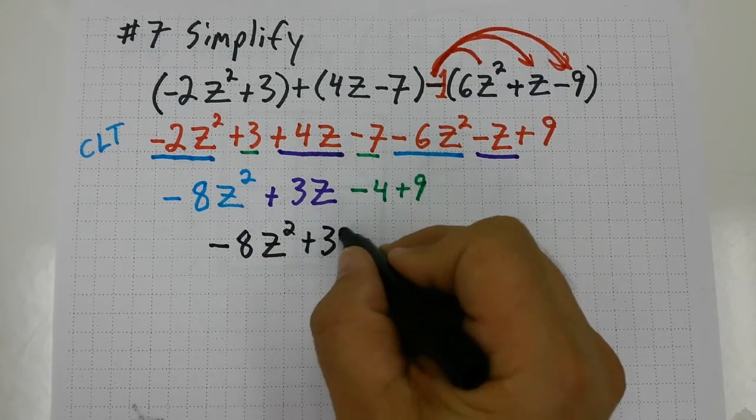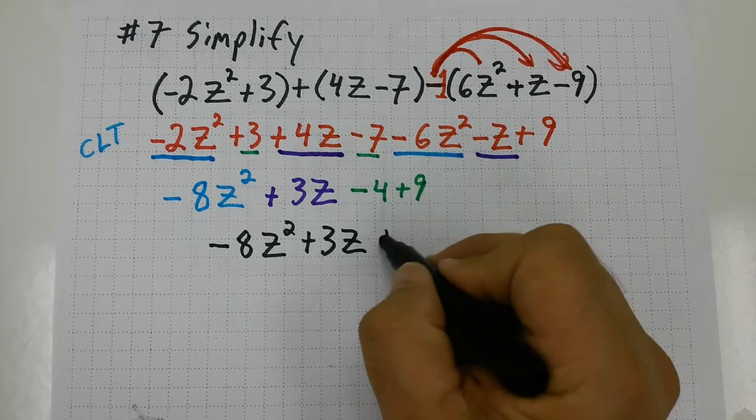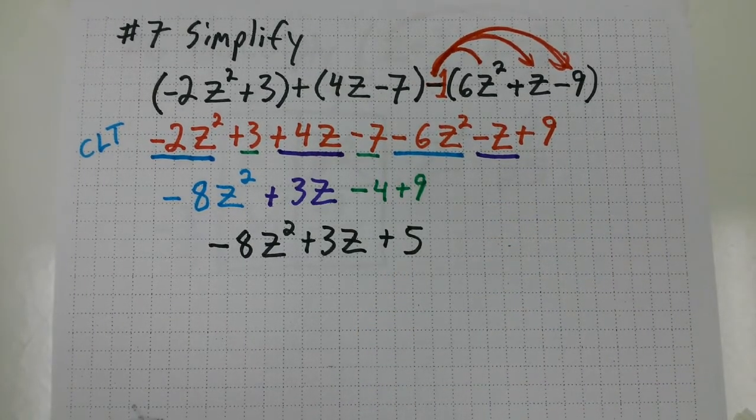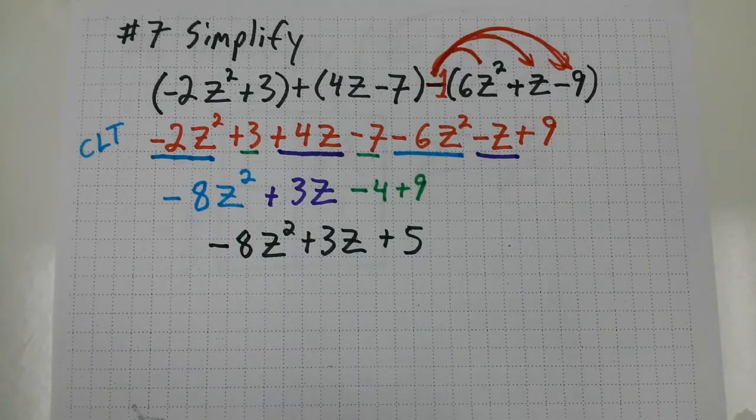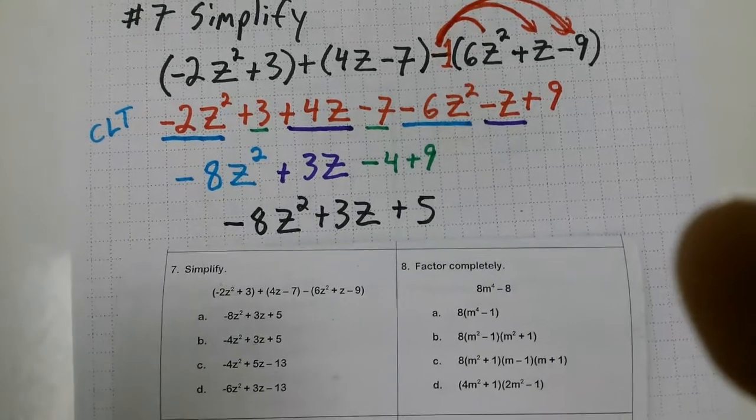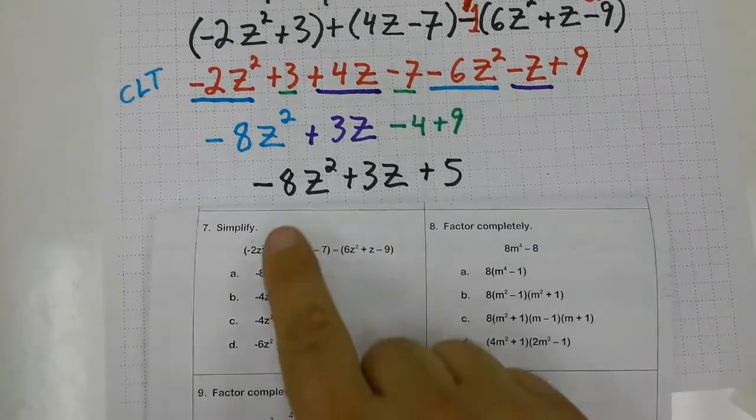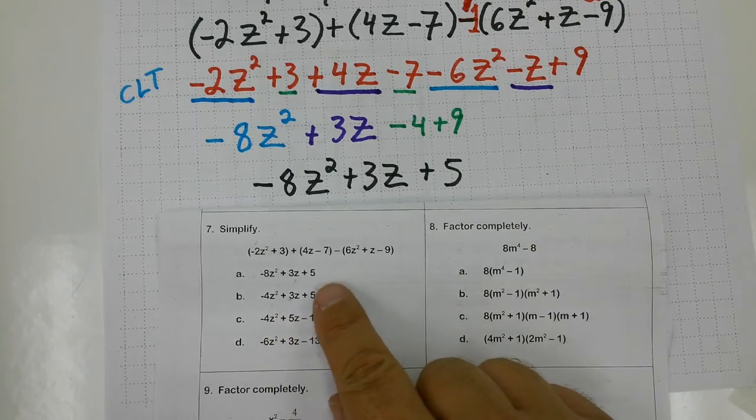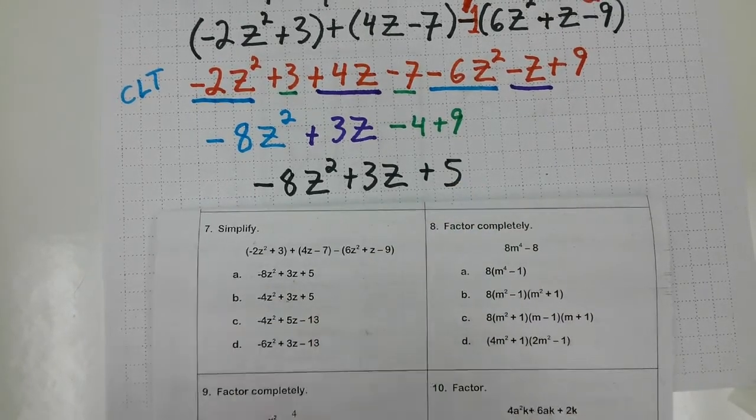So my final answer for this one should be negative 8z squared plus 3z plus 5. Nothing else will combine, so let's see if that matches up with any of our multiple choice selections. Negative 8z squared plus 3z plus 5—it lines right up with choice A.